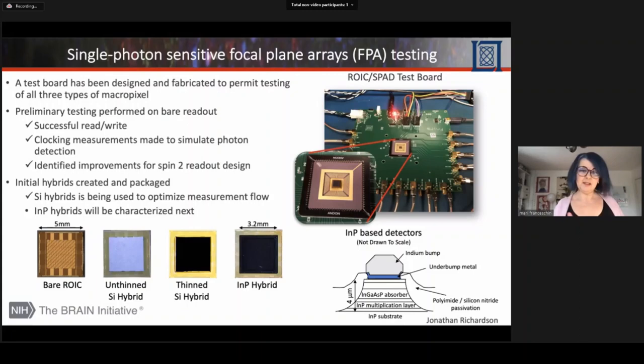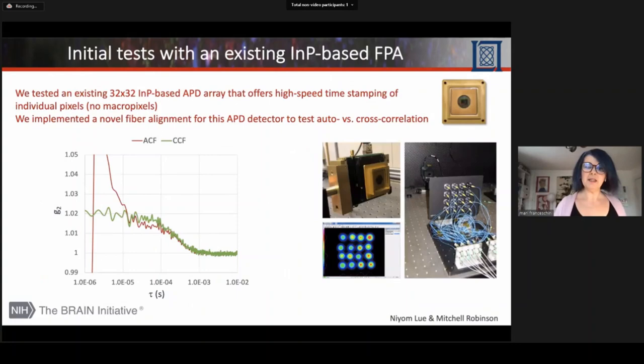This test will inform the final generation ROIC with the design that serves the time domain DCS. While Jonathan is doing this test, we were able to use an indium phosphide-based detector that doesn't have the micro pixel, but we can illuminate 16 spots with this fiber arrangement. And we started to verify the difference between autocorrelation function and cross-correlation function of 16 detectors. This is very preliminary results at very low light.